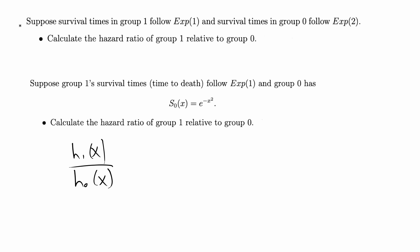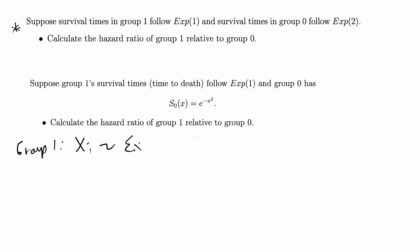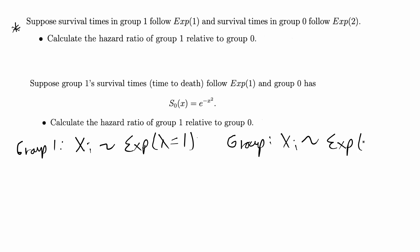For the first problem, for group 1, we're given that the survival times follow an exponential distribution where the parameter lambda is equal to 1, and for group 0, we're given that the survival times follow an exponential distribution with lambda equal to 2.